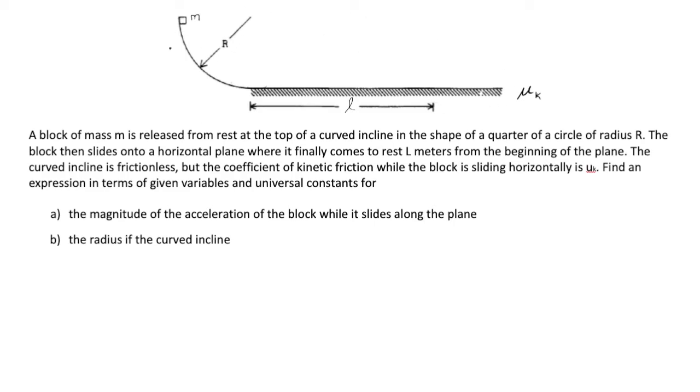The curved incline is frictionless. Let's remember that that is going to be frictionless. But the coefficient of kinetic friction while the block is sliding horizontally is mu k, which is why that's being represented by the crossed lines. Frictionless, then friction.